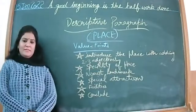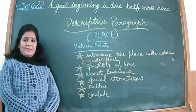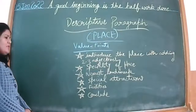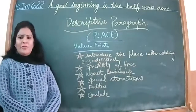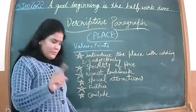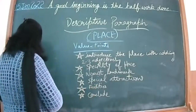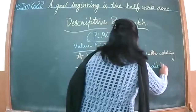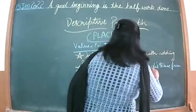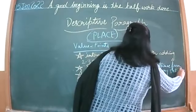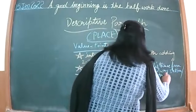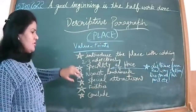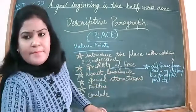Then we have the specialty of the place - what is the speciality of this place that we should tell. Also the nearest landmark - like suppose it is situated near the airport, near the railway station, near the bus stand. You can also mention the distance from the railway station or bus stand or airport. Choose only one - do not write all the distances.